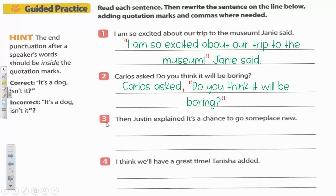Number three: then Justin explained, it's a chance to go someplace new. What are the words coming out of Justin's mouth? It's a chance to go someplace new, right? Don't forget, you need a comma after the speech tag.